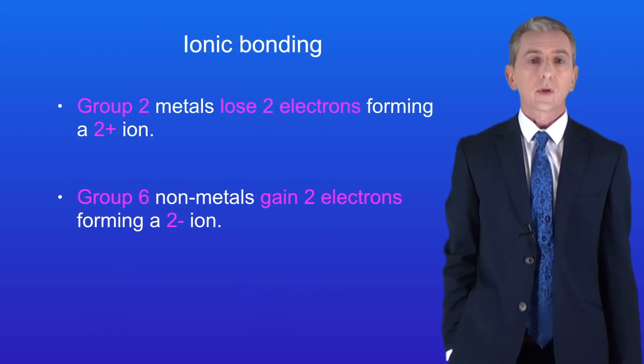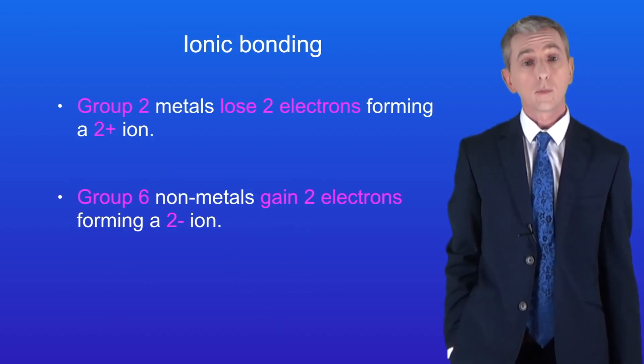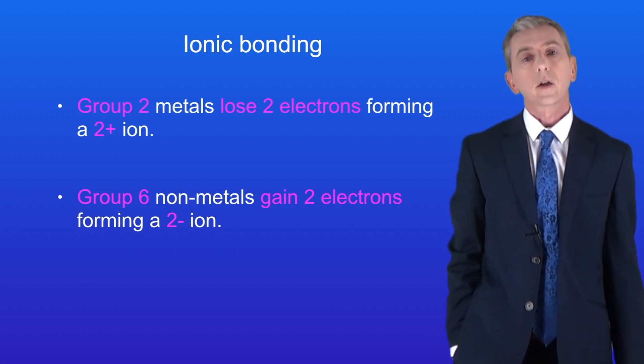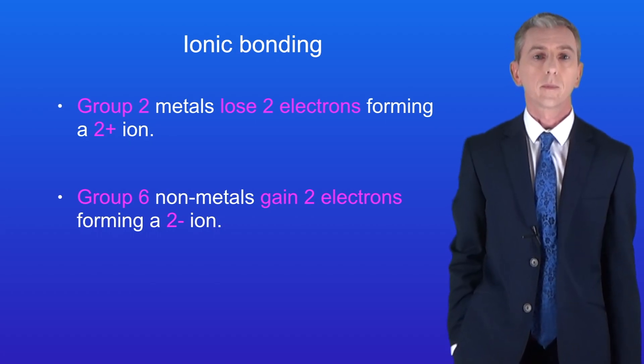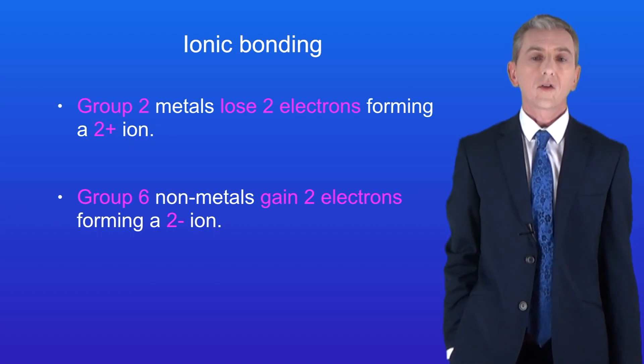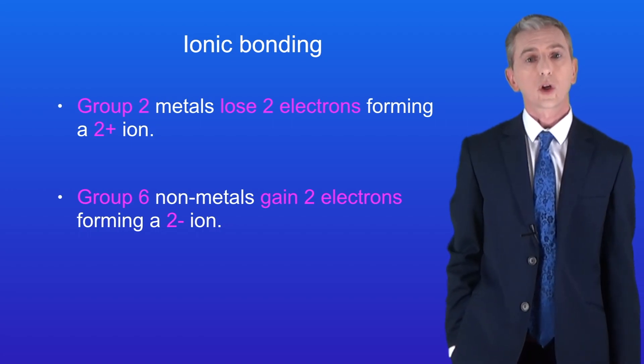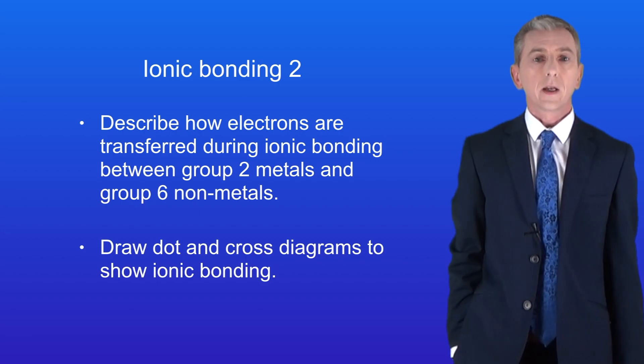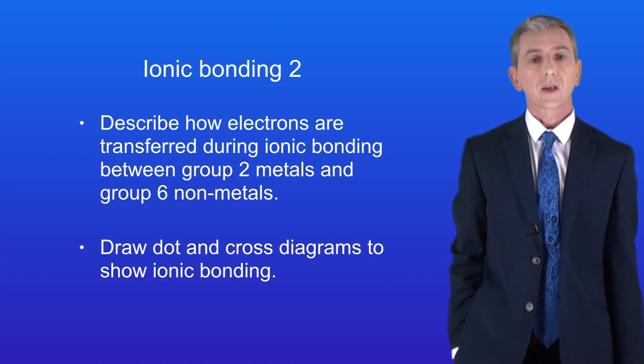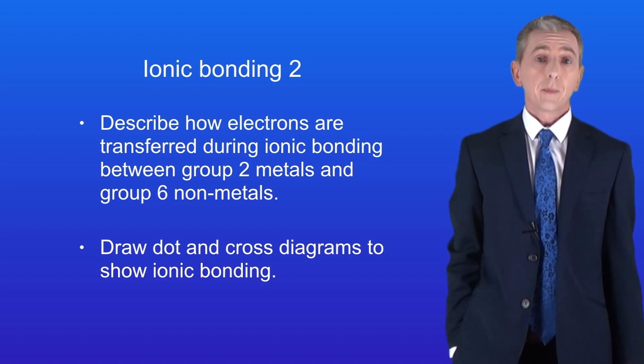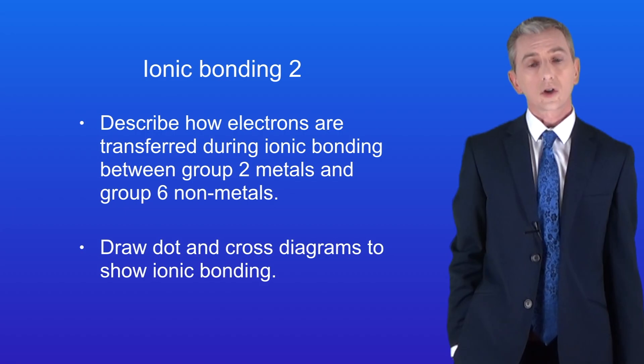To recap, during ionic bonding group 2 metals lose 2 electrons forming a 2 positive ion and group 6 non-metals gain 2 electrons forming a 2 negative ion. You'll find plenty of questions on ionic bonding in my revision workbook which you can get by clicking on the link above. So hopefully now you should be able to describe how electrons are transferred during ionic bonding between group 2 metals and group 6 non-metals, and be able to draw dot and cross diagrams to show ionic bonding.